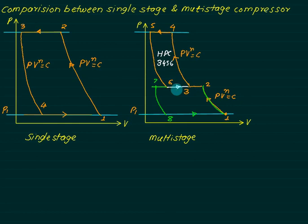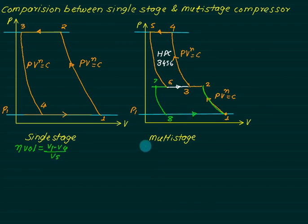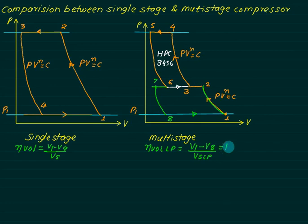Looking at both diagrams, the volumetric efficiency for the single stage is η_vol = (V1 − V4) / V_s. For the multi-stage case, we define η_vol for the LP stage, which equals the actual volume (V1 − V8) divided by V_s of the LP cylinder. This equals 1 + C_L − C_L × (P2/P1)^(1/n), where C_L is the clearance ratio of the LP cylinder.